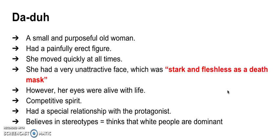This is also shown through her competitive spirit. She had a special relationship with the protagonist, which we have already discussed. She also believes in stereotypes, thinking that white people are dominant. We can see this when she wishes that the narrator had lighter skin, because she believes that she would find life easier with lighter skin. She is also scared and can't believe that the narrator had dared to have a fight with a white girl when she was in New York.